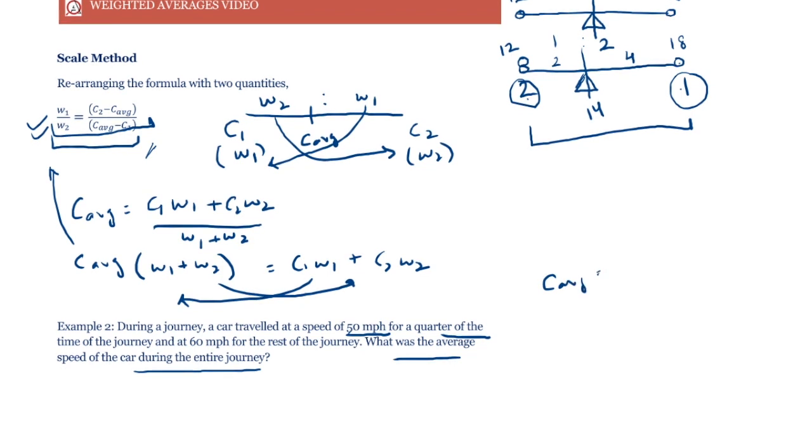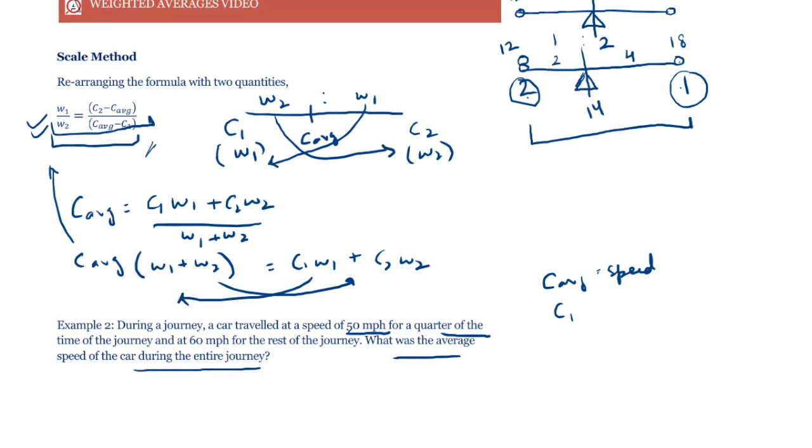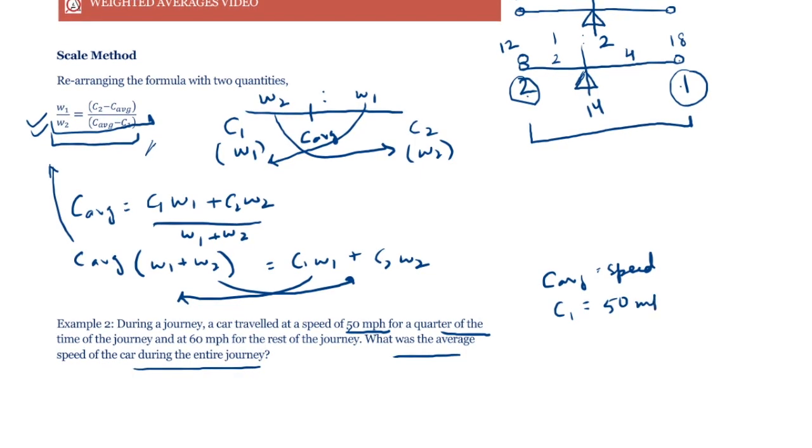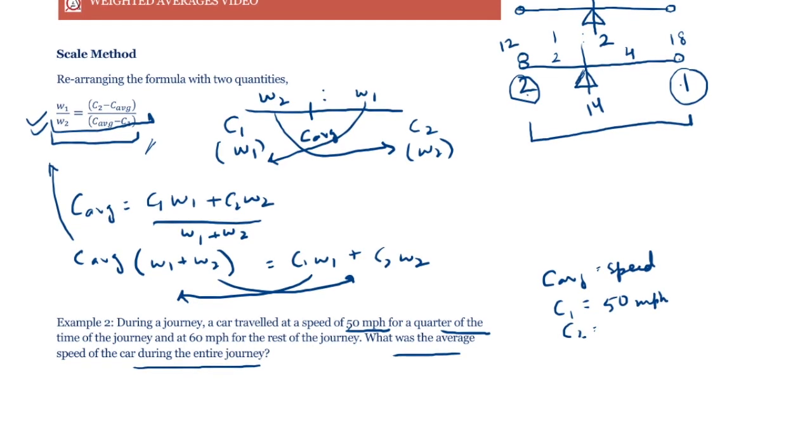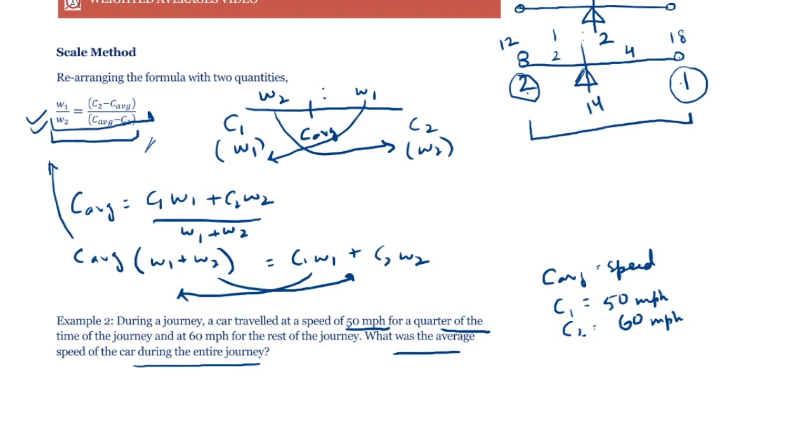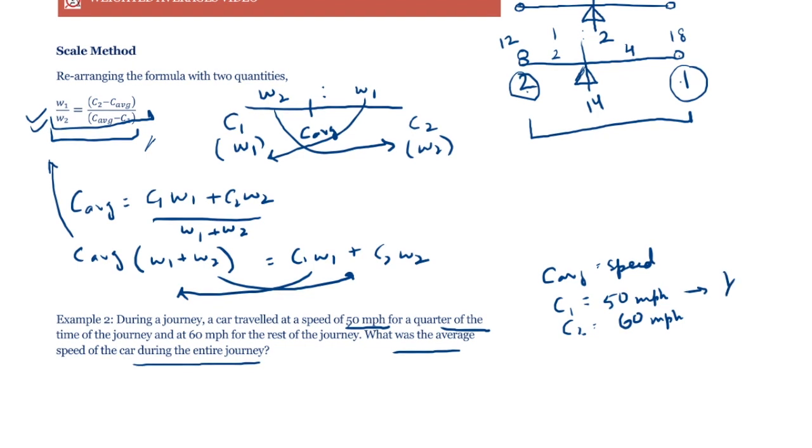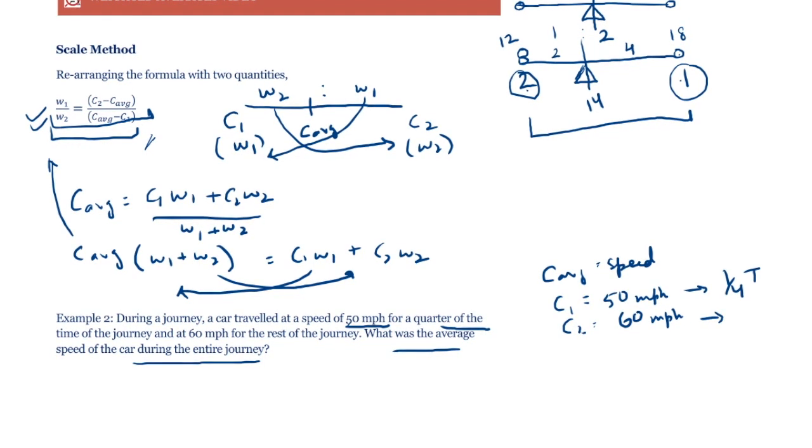Our c average is speed. c1 is one instance of speed, which is 50 mph, and c2 is the other instance, which is 60 mph.